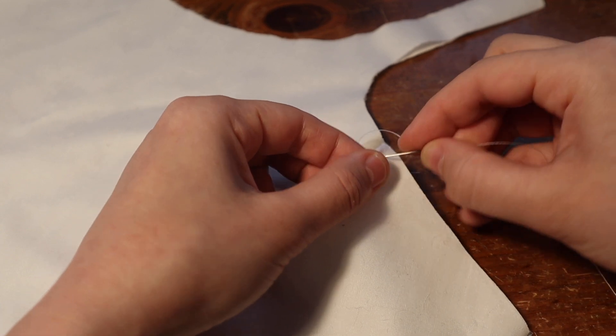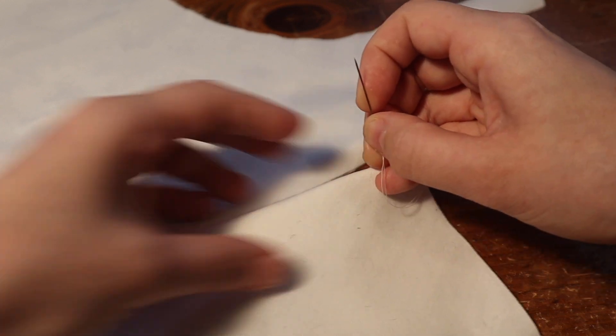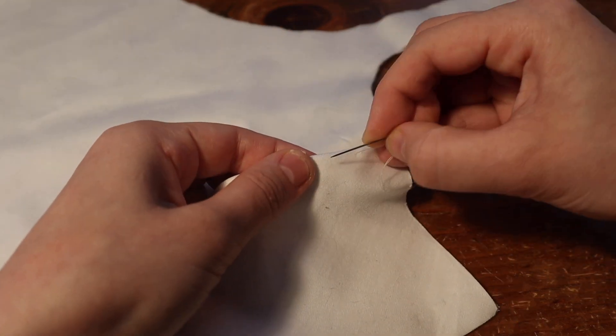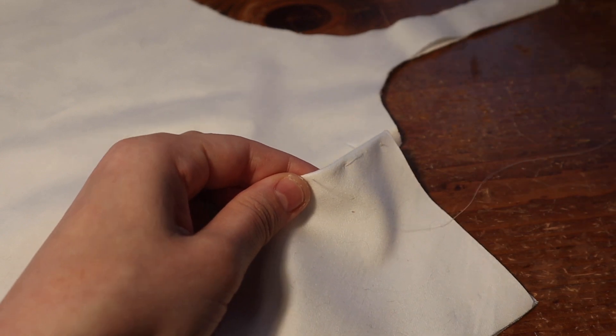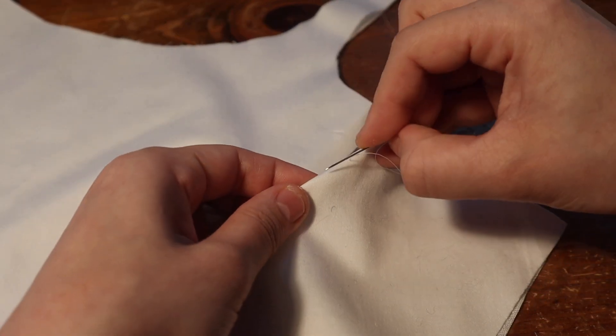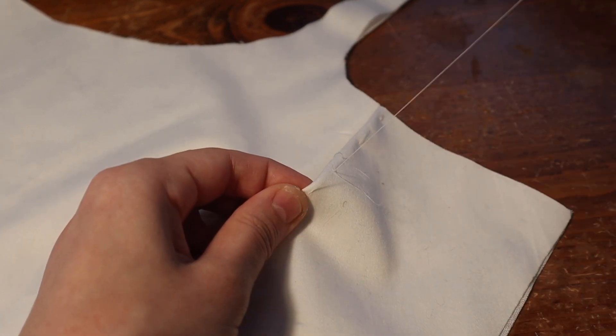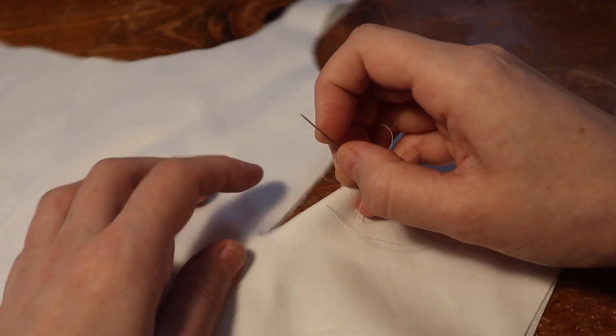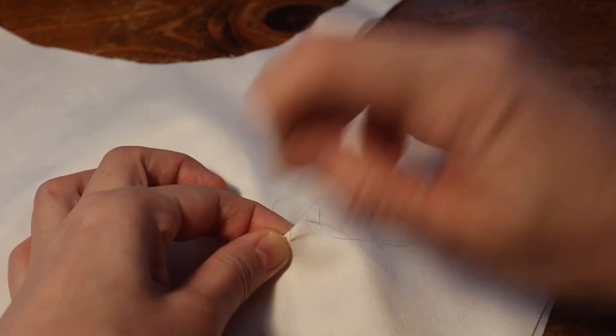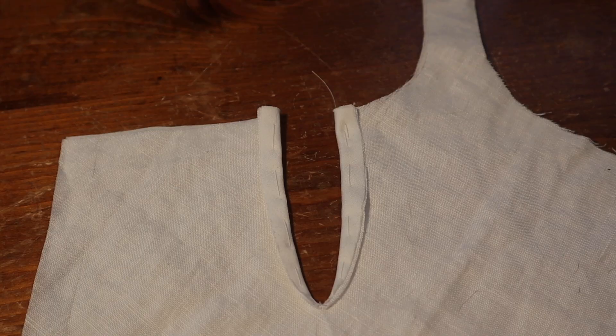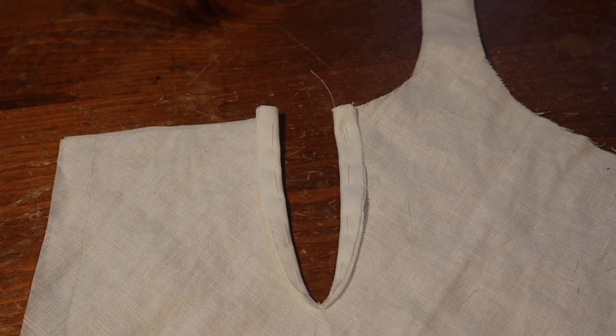The first step in the construction of the stays is to put in the bust and hip gussets. I'm just going to show you one of the bust gussets, but the technique is the same for all of them. Again, treating the outer layer and the interlining as one, I'm folding back the seam allowance for the gusset and basting it back. The seam allowance starts at a quarter of an inch at the top and tapers to pretty much nothing down at the point.